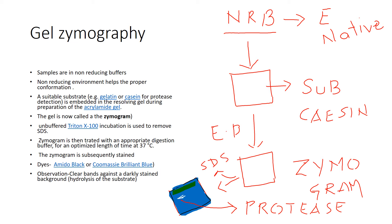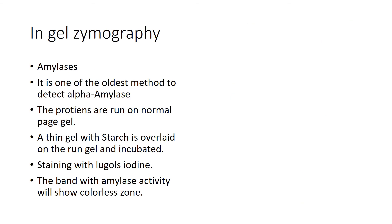In gel zymography, the oldest enzyme detected by this technique was alpha-amylase. Everything remains the same, with one change: the gel was run normally, and after electrophoresis was done, you could receive bands of protein as per your sample homogeneity.